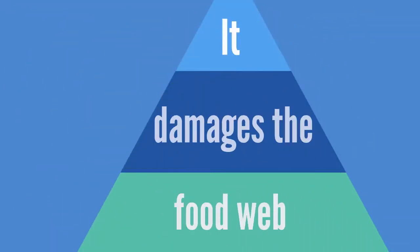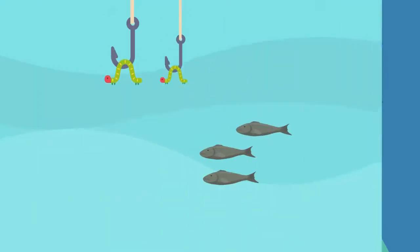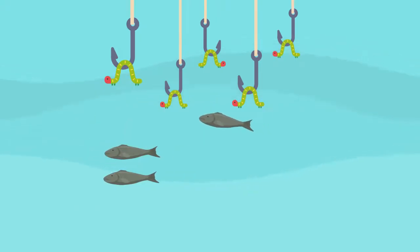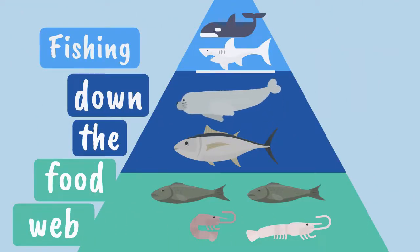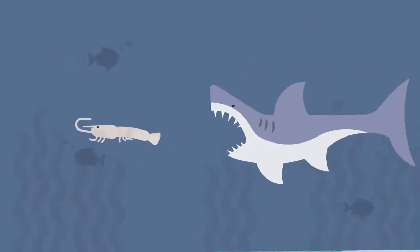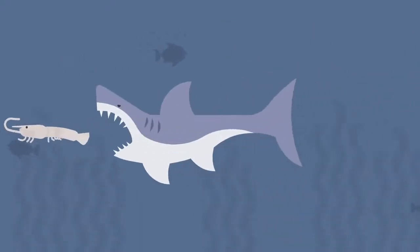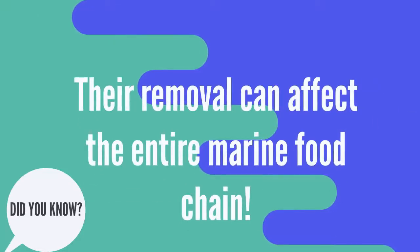It also damages the food web. When bigger fish are no longer found in an area, fishermen typically move on to smaller species like sardines or anchovies. This is known as fishing down the food web. These species are often important prey for other animals, so it creates an imbalance and their removal can affect the entire marine food chain.